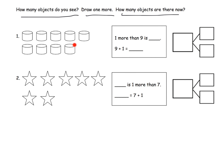So let's take a look at number one. We're looking at these cylinders, and I see that there's one, two, three, four, five, six, seven, eight, nine. So there's nine cylinders right now, and we're going to draw one more. So I'm going to draw one more cylinder.